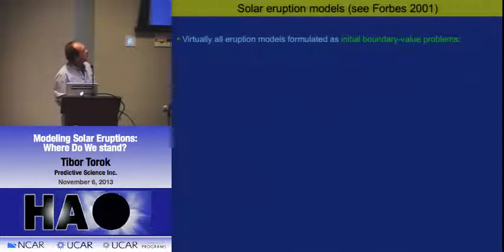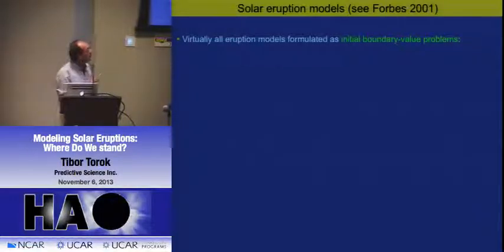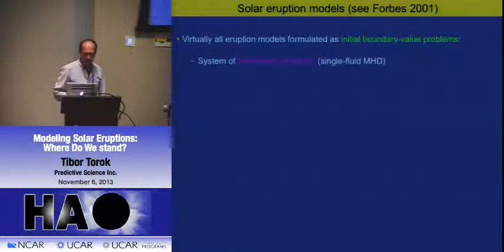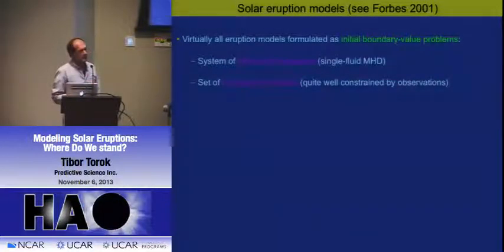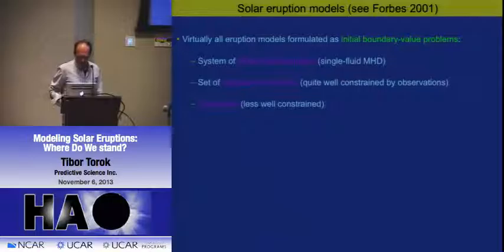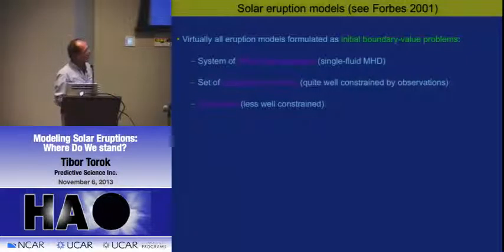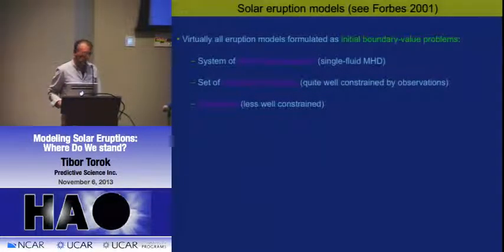Before I show these models, I'd like to make a few general remarks. Basically, all these eruption models are formulated as initial boundary value problems: we have a set of differential equations—usually MHD, single fluid—a set of boundary conditions relatively well constrained by what we observe in the photosphere, and we need an initial state for our simulations representing the pre-eruption state in the corona. Because we don't have direct measurements of the magnetic field there, that is less well known—we have to make guesses.